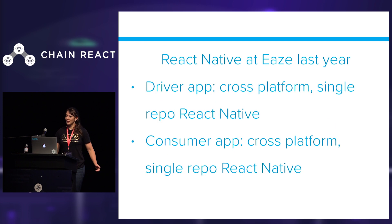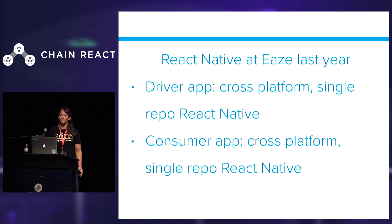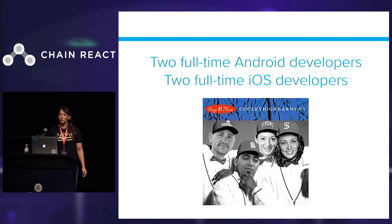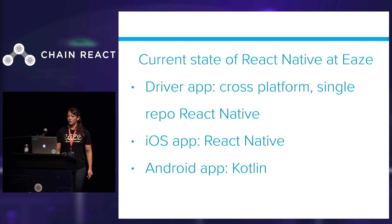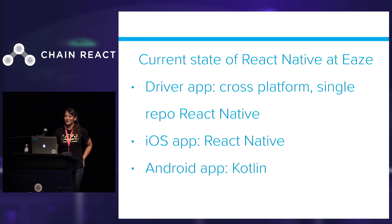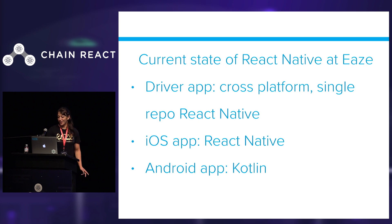Last year, the state of React Native at Ease: we had two Greenfield fully React Native apps — our driver app and our consumer app — both cross-platform, single-repo, Greenfield React Native. Since then, we've grown our mobile team to four people — a quartet: two full-time Android developers and two full-time iOS devs. The current state has changed a bit. The driver app is still that cross-platform single-repo Greenfield app, but the consumer app has diverged its code bases. The iOS app decided to stay on React Native, and the Android app moved over to Kotlin.